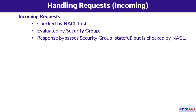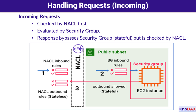Let's explore how NACLs and security groups handle requests. For an incoming request, it first hits the NACL associated with the subnet. If the request is allowed, it then moves to the security group at the instance level for further evaluation. In step one, the NACL's inbound rules are checked. NACLs operate at the subnet level and are stateless, meaning they evaluate both requests and responses independently. If the request doesn't match an allow rule, it's denied right there.